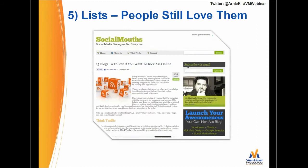Number five: lists. People still love lists. If you're going on a vacation, maybe you look for the top things to do in Hawaii. Here's an example on Social Mouths: '15 blogs to follow if you want to kick ass online' — that was a very popular post. At that point it had 495 tweets and lots of people liking it. They work really well. We did a study seeing what kinds of content got linked to the most, and one of the top pieces of content that attracted the most backlinks is lists.